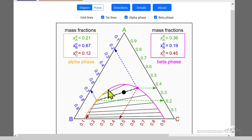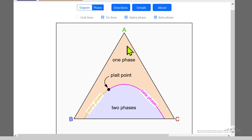This simulation also has a diagram just to make it clear. This is the one phase region. This is the plait point I mentioned, alpha phase, beta phase, and then this is the two phase region.